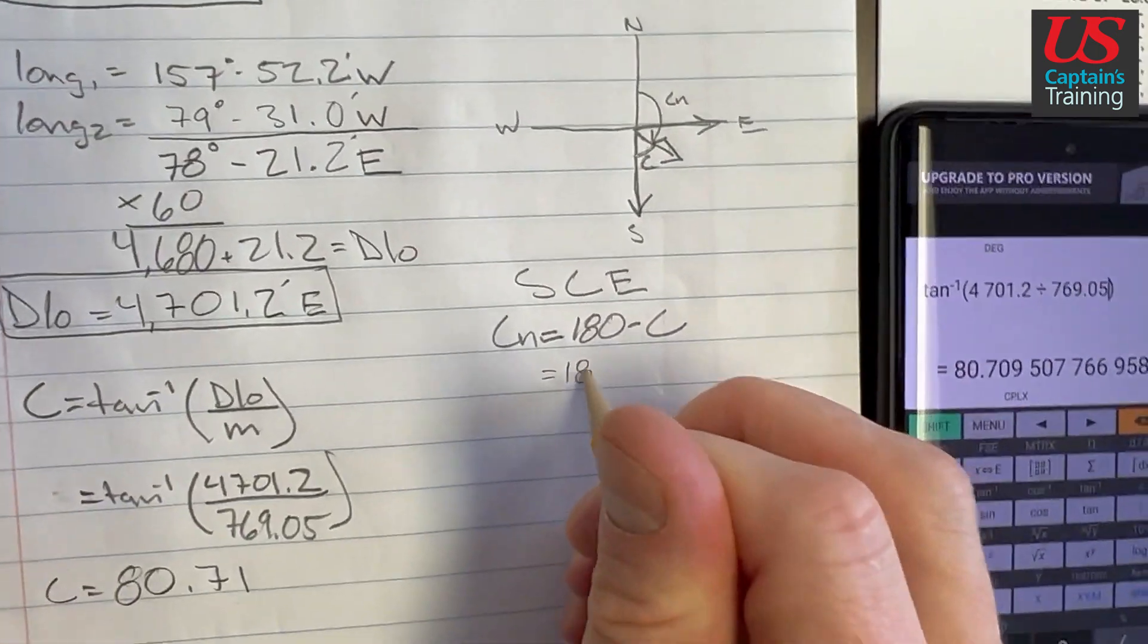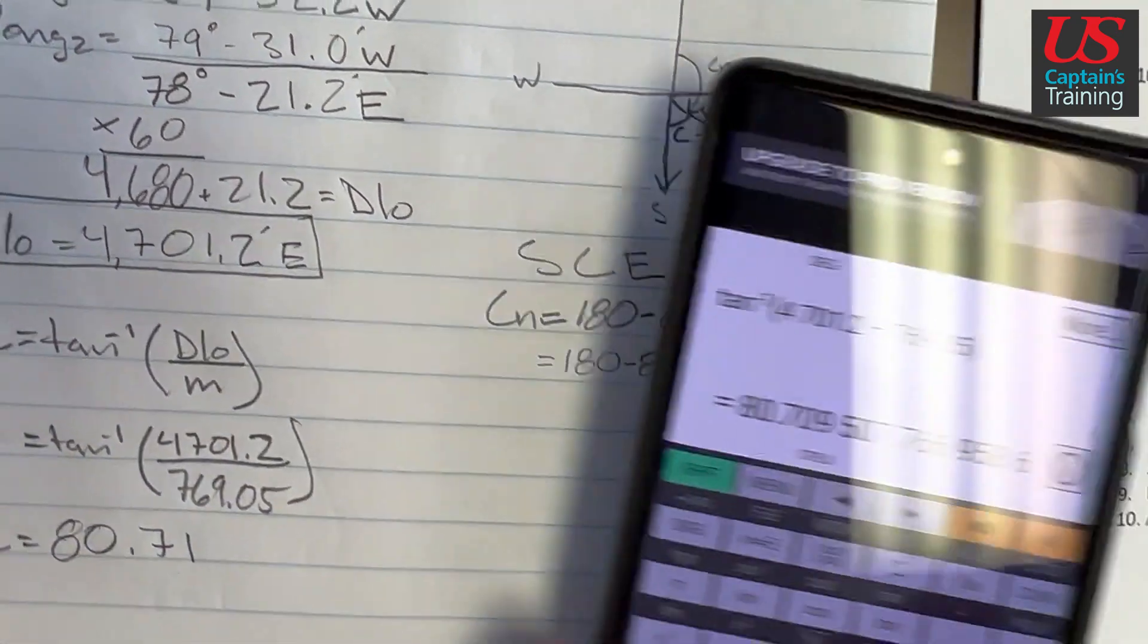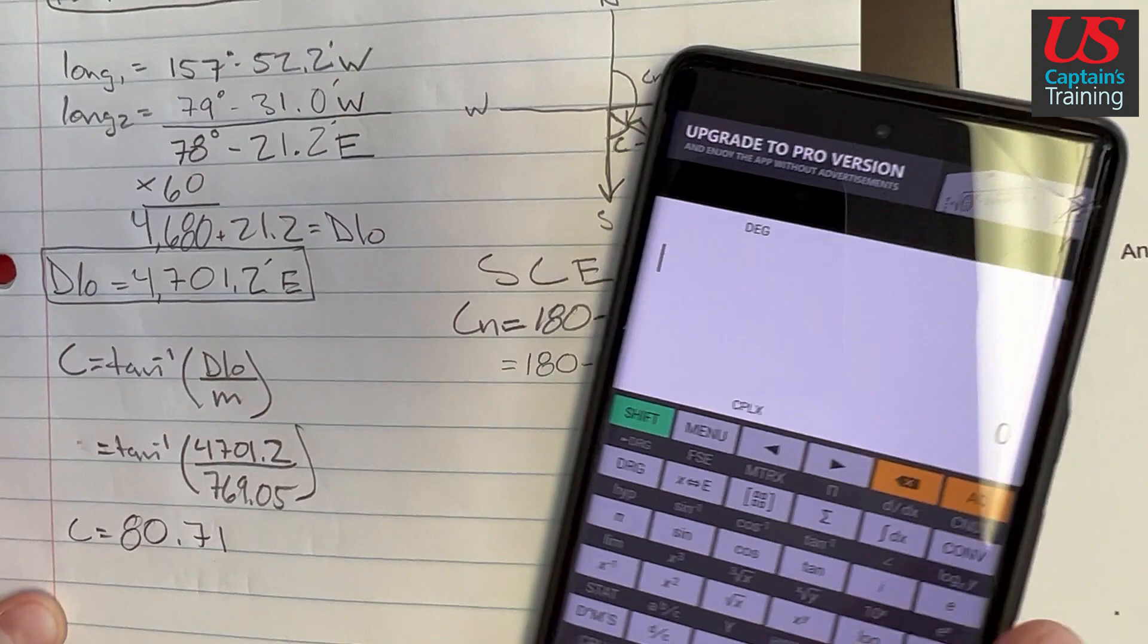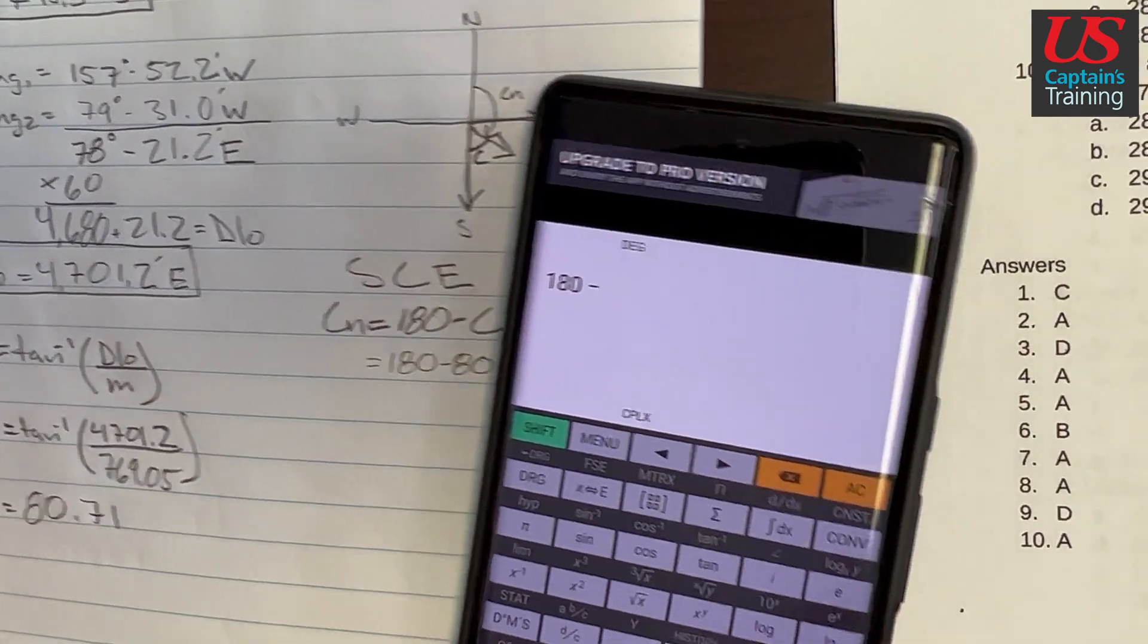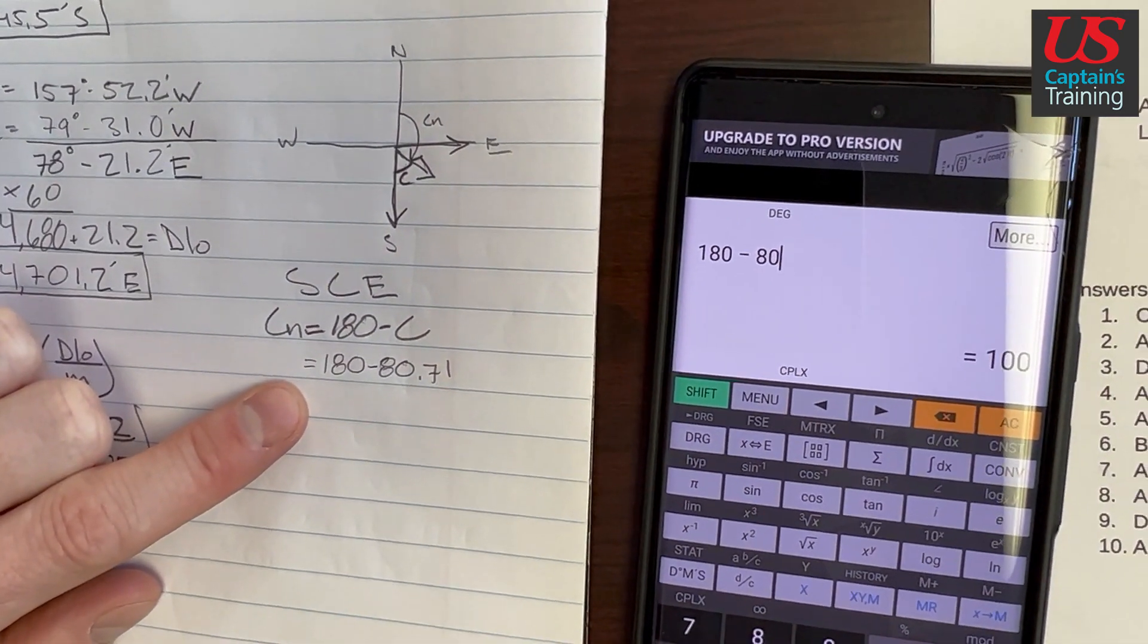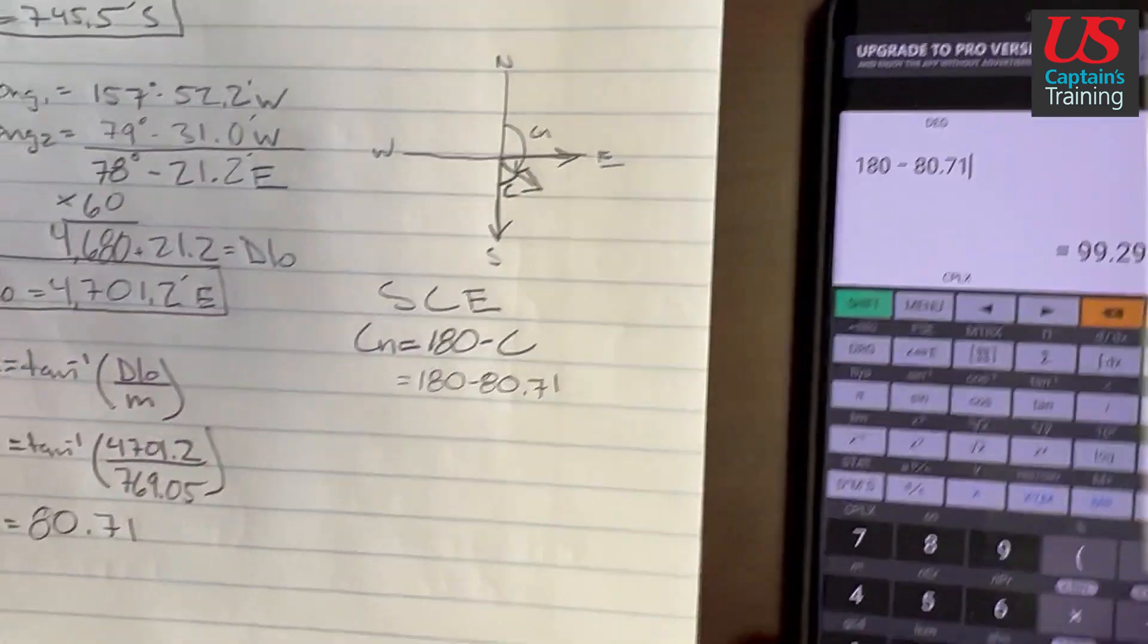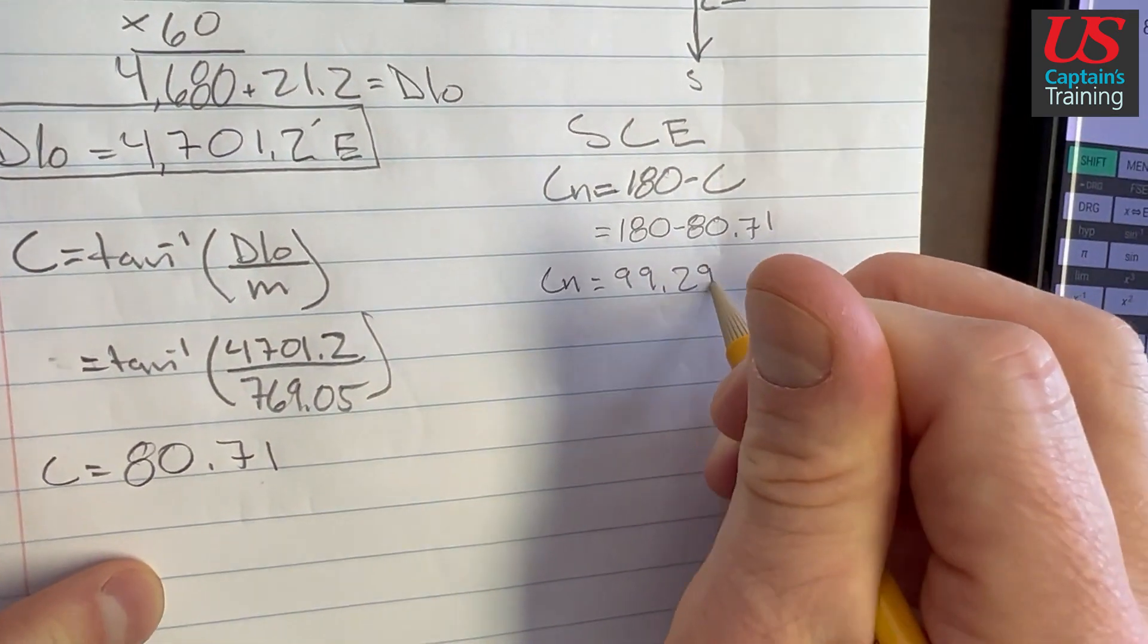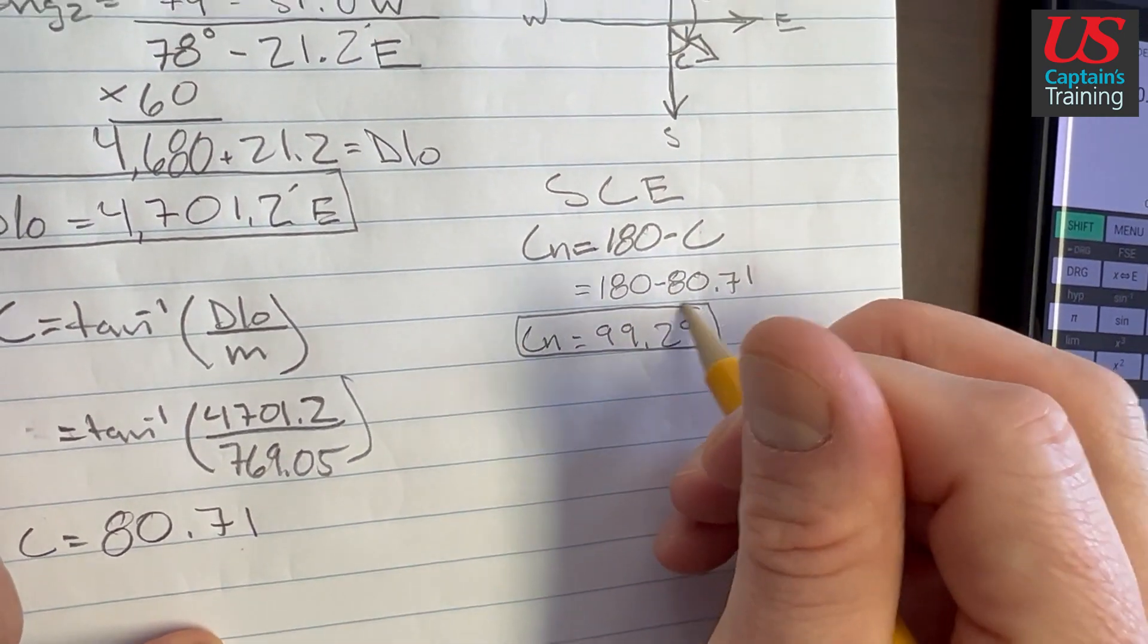So let's punch this in. C_N equals 180 minus 80.71. Let's just do it. 180 minus 80.71 equals 99.29. So C_N equals 99.29. This should be one part of the answer.